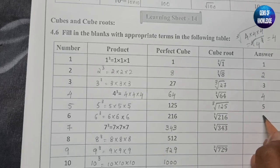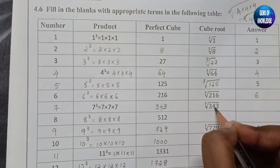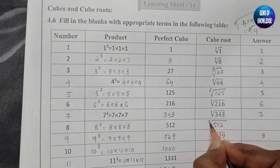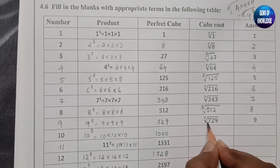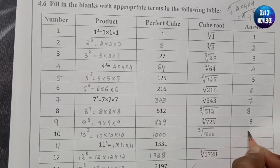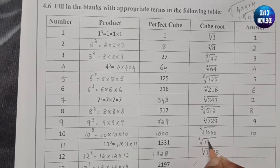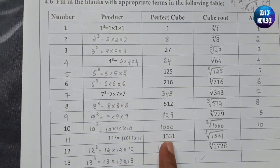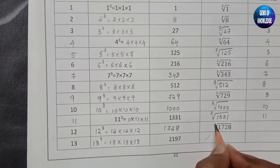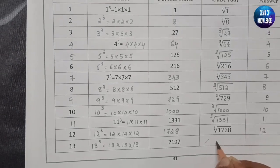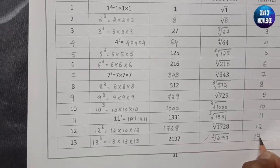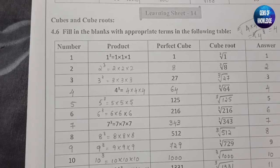Cube root of 125 is 5. Cube root of 216 is 6. Cube root of 343 is 7. Cube root of 512 is 8. Cube root of 729 is 9. Cube root of 1000 is 10. Cube root of 1331 is 11. Cube root of 1728 is 12. And cube root of 2197 is 13.